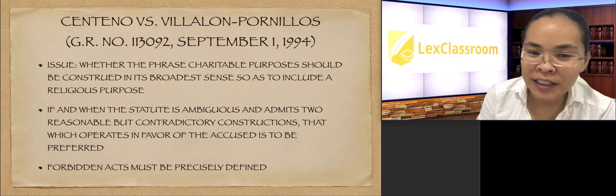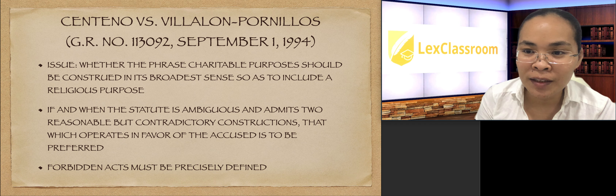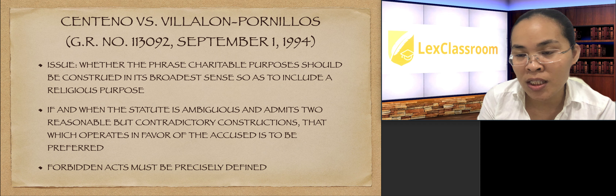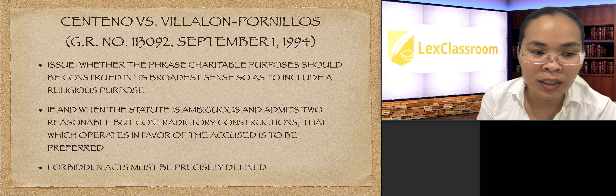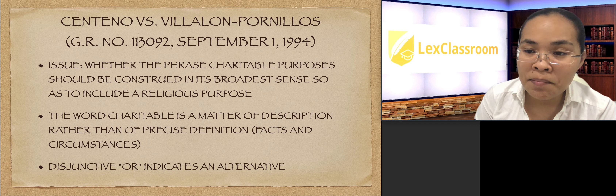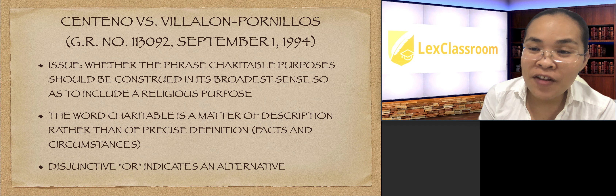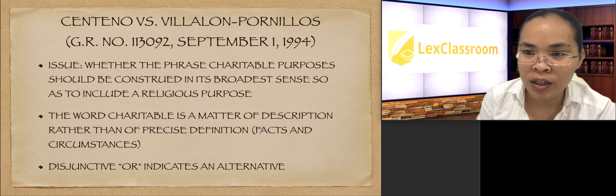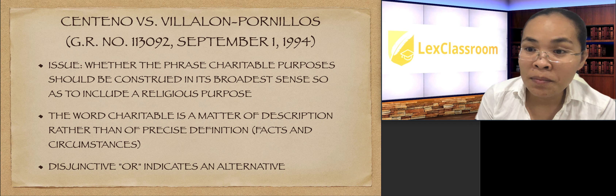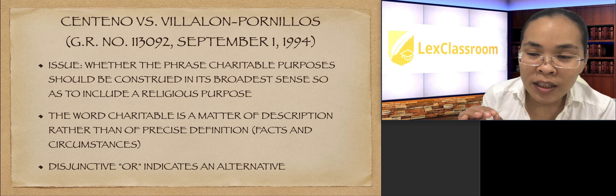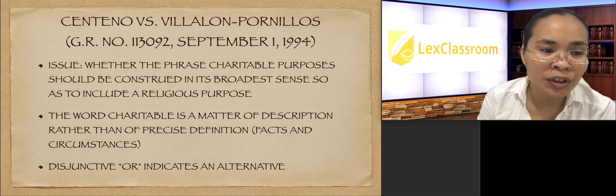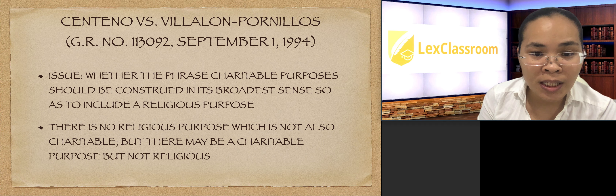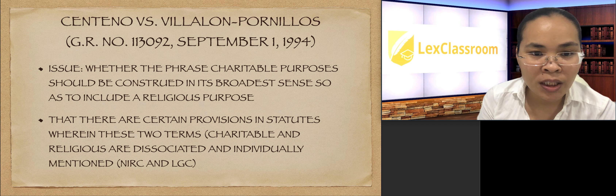The forbidden acts must be precisely defined — clear-cut — because it would be unfair to the accused if an act is considered criminal without clearly knowing the elements or the coverage of that criminal act. The word 'charitable' is a matter of description rather than of precise definition, and what is charitable depends on the facts and circumstances involved in the case. The disjunctive word 'or' indicates an alternative.